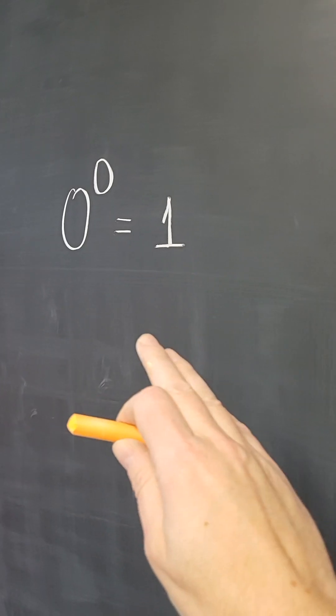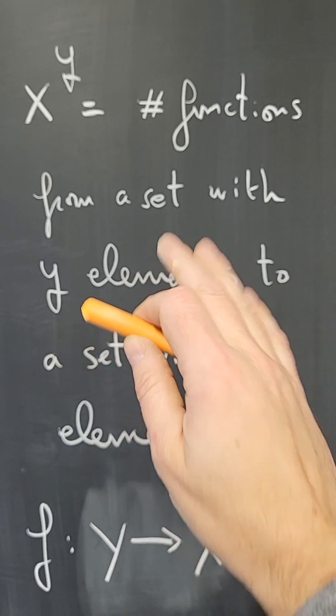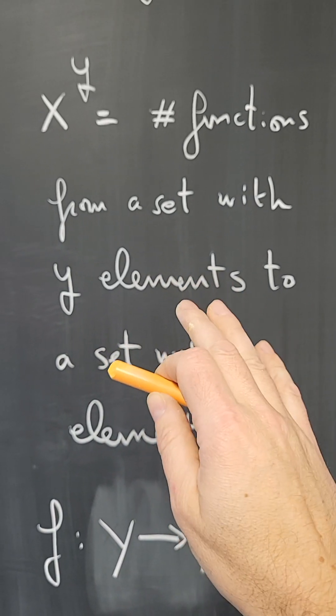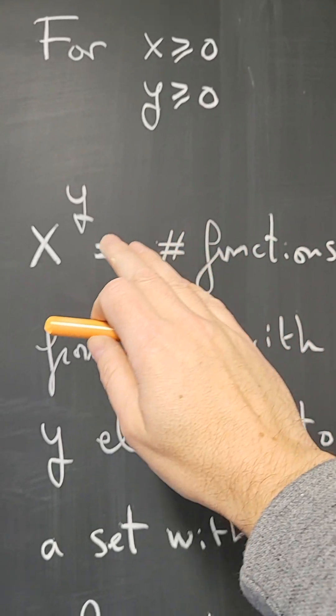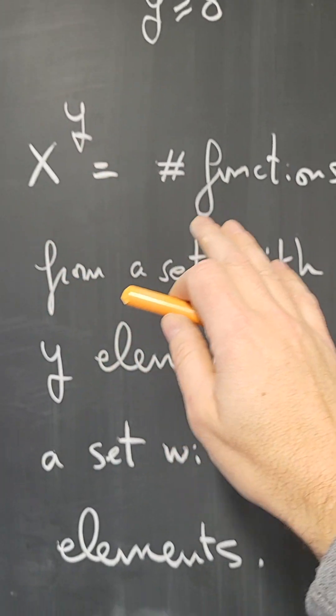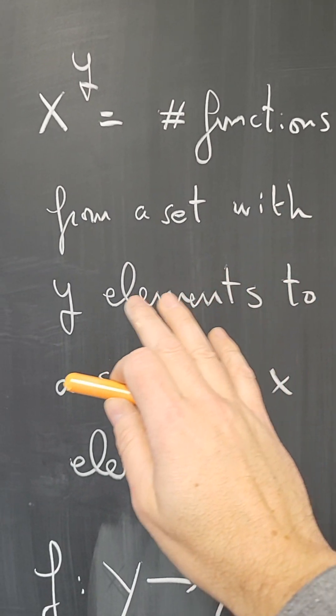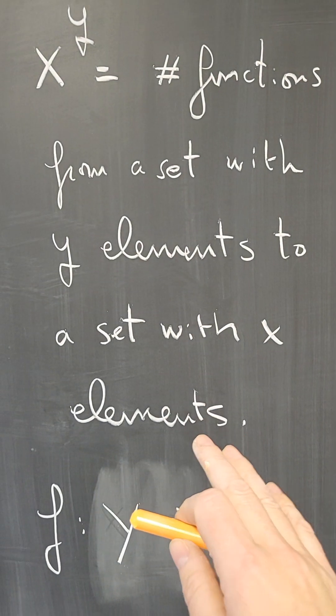Why? They say so because they have a combinatorial explanation or a set theory explanation of x to the y in mind. Take x and y to be non-negative integers. Then we define x to the y to be the number of functions from a set with y elements to a set with x elements.